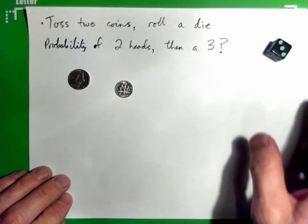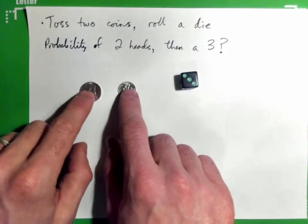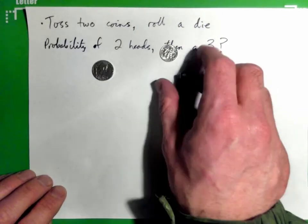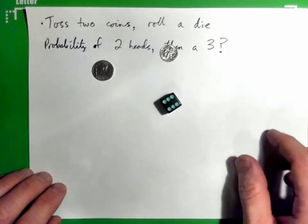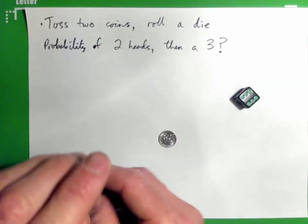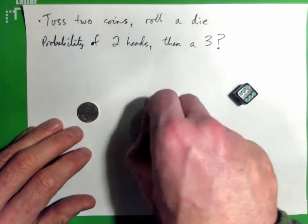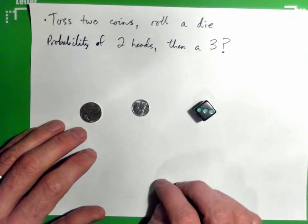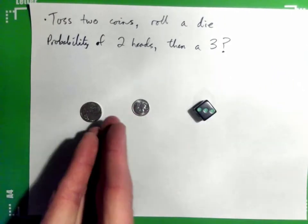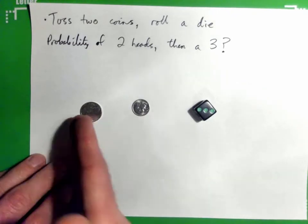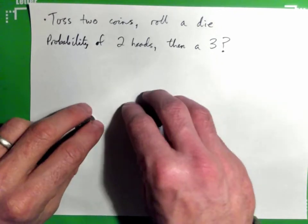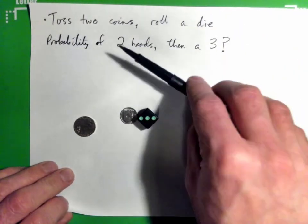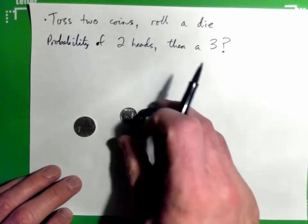We got a three but didn't get heads, so we'll try again. Got a head on one but not the other, so then I roll the dice and get a six. But we need head, then head, then a three — all three events have to happen. Our event is: toss two coins, roll the die, and get two heads then a three.